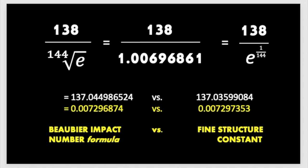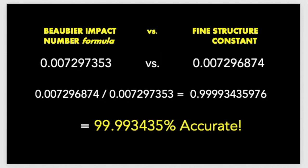When we compare the accepted value of the fine structure constant, which is very well defined and very precise, this is what we come up with. The Beaubier impact number is good for the first five digits after the decimal place, and if we round, it's good to the sixth. I don't know. I mean, I'm not a mathematician, guys.